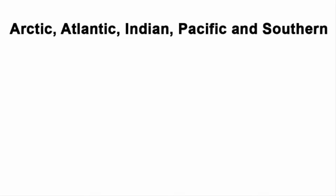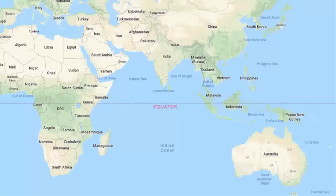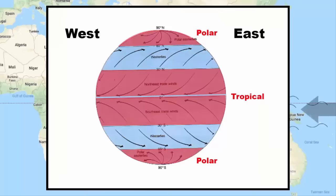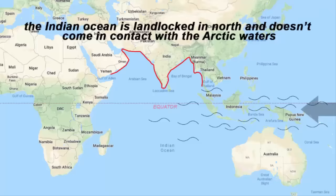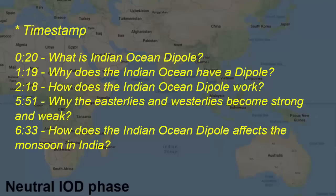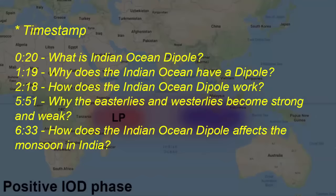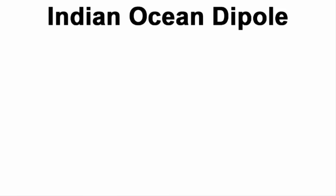In this video, we will learn about what is the Indian Ocean Dipole, which is often called the IOD, what are the reasons behind its occurrence, then we will also learn about the three phases of the Indian Ocean Dipole — which are neutral, negative, and positive phase — and in the end, we will learn how it affects the monsoons in India. So let's get right into it.